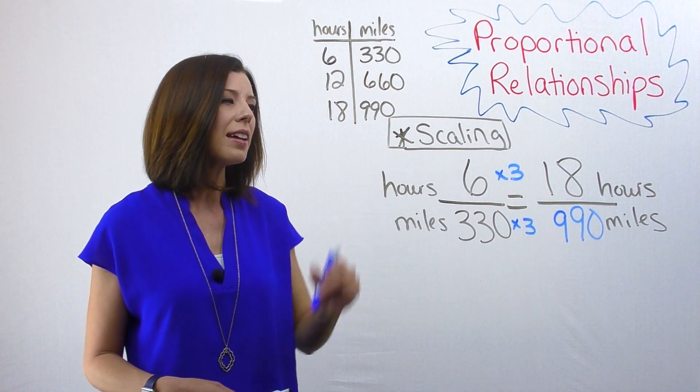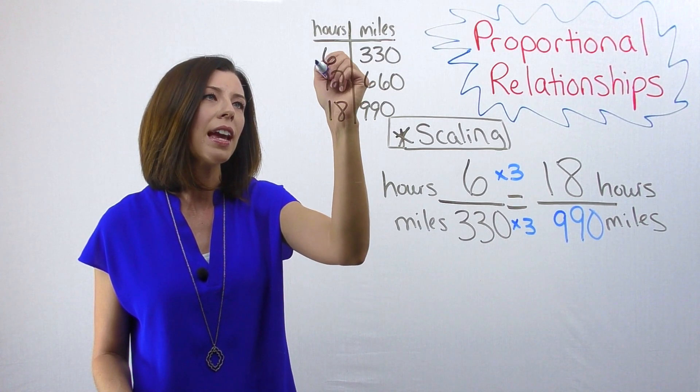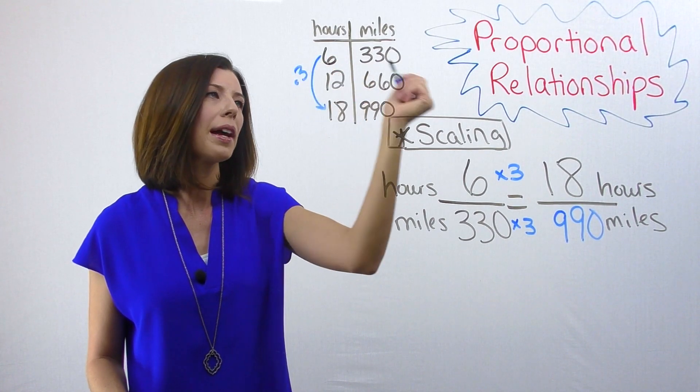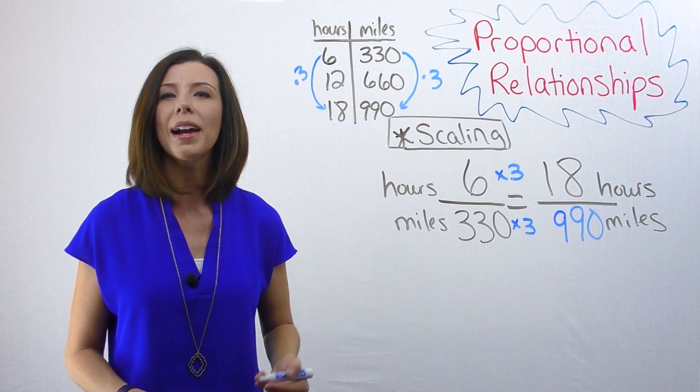When I'm looking at my scaling method of proportional reasoning here, I'm literally saying from here to here I'm multiplying times three, and from here to here I'm also multiplying times three.